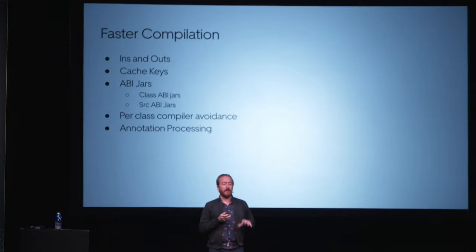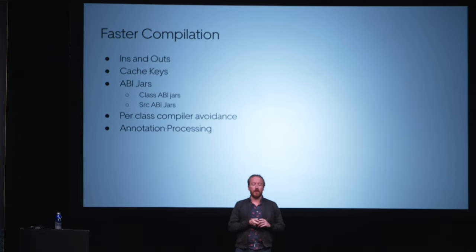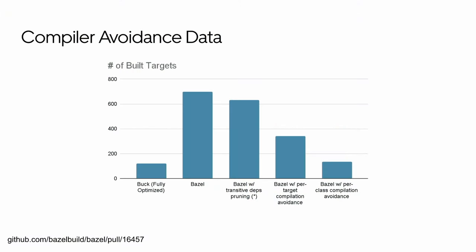Here are the results of the compiler avoidance data. Bazel out of the box builds a huge number of targets compared to Buck on an internal Kotlin target example. Buck is doing useclasses and all the other optimizations we talked about — Bazel doesn't have that built in. So we put up a PR that has a per-class compiler avoidance technique for Bazel core. With that, we're able to pretty much get parity between Buck and Bazel for compiler avoidance, which is significant because the number of targets maps roughly to the number of seconds it takes to build.